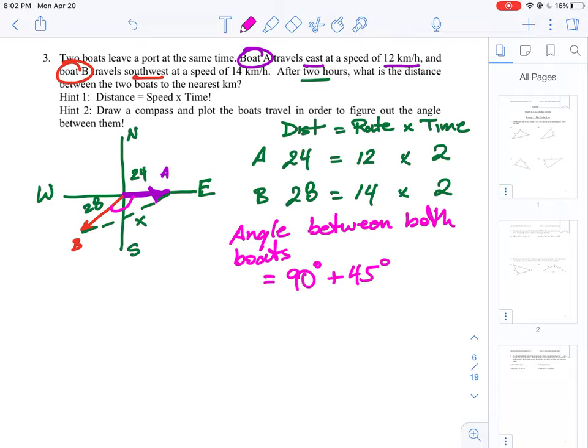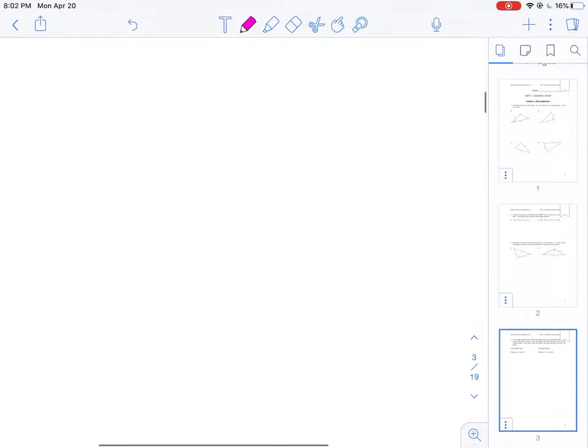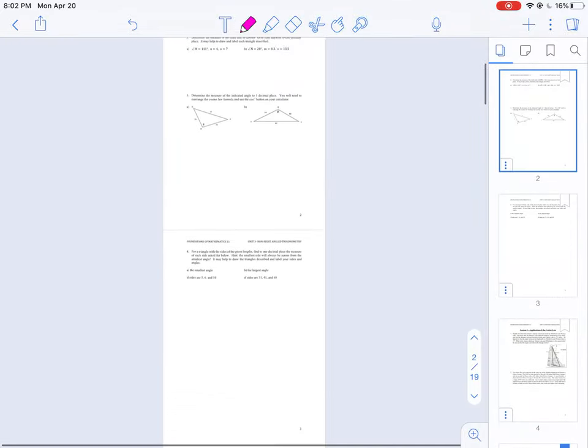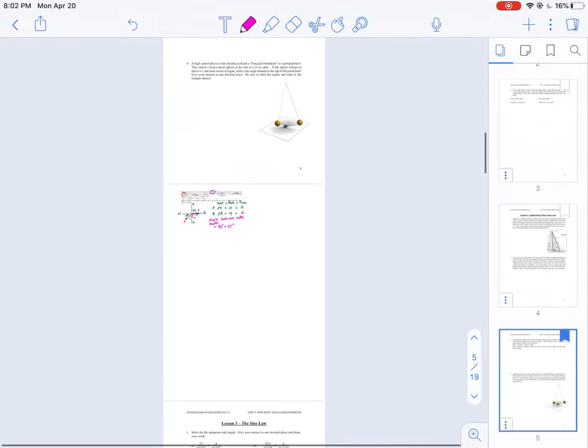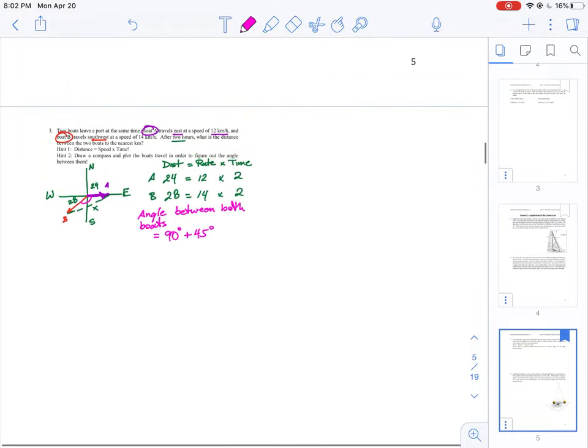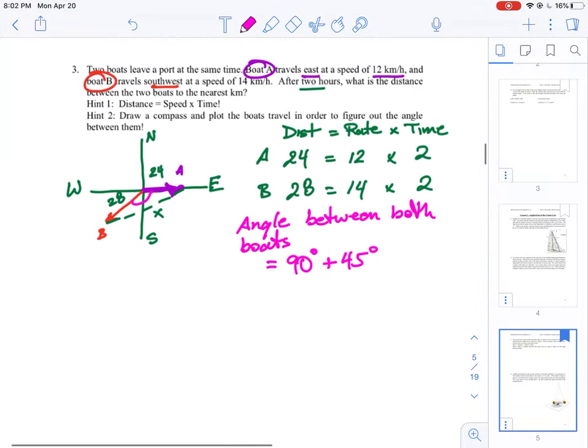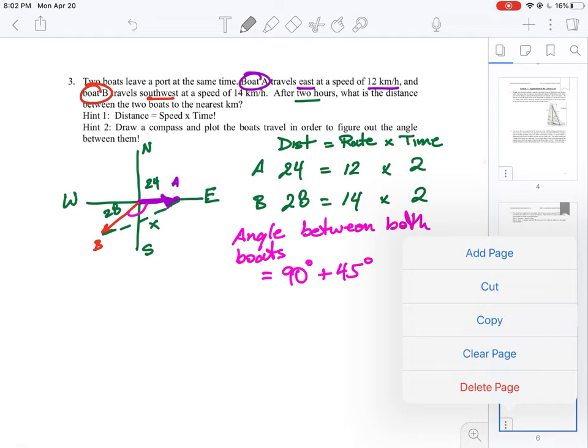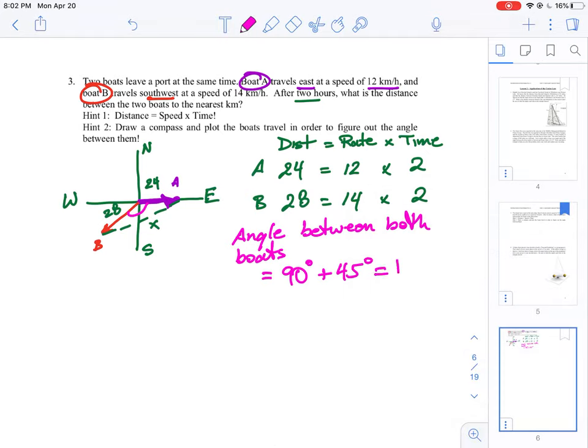If you think about that angle there, 90 is the first part, east to south, and then from south going west we're taking another 45 degrees. Our total distance for that angle is equal to 135 degrees.